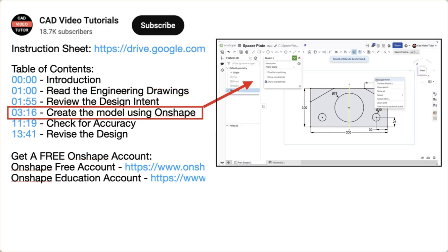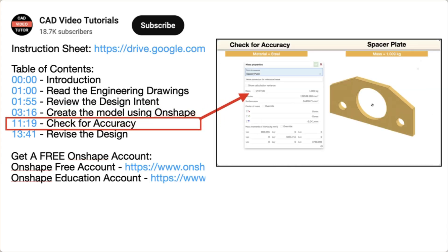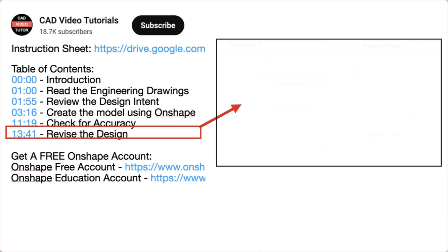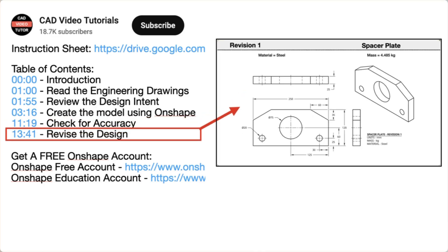In segment 3, you will create the part model using Onshape. Next, you will check the accuracy of your model by checking its mass properties. Last, you will check the design intent by making changes to the model to see if it will update correctly.